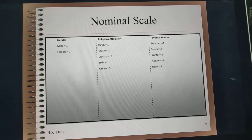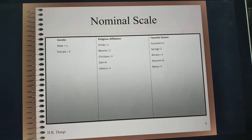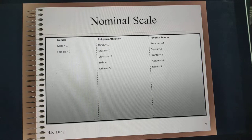For example, if you are classifying respondents as male and female and terming male as one and female as two, then it is nominal data. Or you can classify respondents based on their religious affiliation: Hindu 1, Muslim 2, Christian 3 — then it would be nominal data.